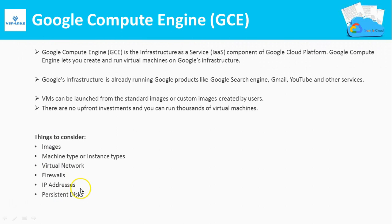There are some things you should know before launching a virtual machine. Images are the blueprint of an operating system. Machine type or instance type defines the hardware of your virtual machine — how much CPU and memory you want. You need a software-defined virtual network to access your machines. Firewalls define the incoming and outgoing traffic, which ports to open and which to block. IP addresses are used to find your machines in the network. Persistent disks give you volumes that act as a hard disk for your virtual machines.